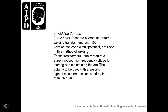For welding current: Generally, standard alternating current transformers with 100 volts or less open-circuit control are used in this method of welding. The transformer usually requires superimposed high-frequency voltage for starting and maintaining the arc. The polarity to be used for the specific type of electrode is established by the manufacturer.